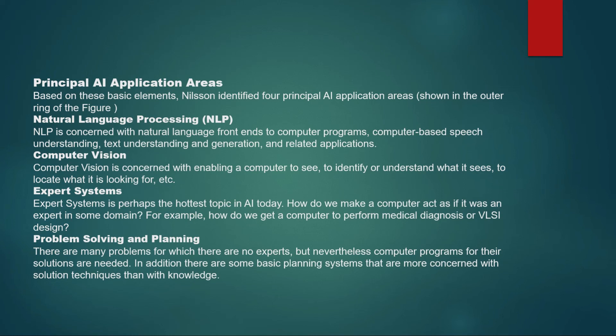To summarize, Nielsen is the researcher who proposed the Onion Model because it has rings like an onion, with an inner ring and an outer ring. The inner ring represents the main basic elements and the outer ring represents the application areas of artificial intelligence. That is all from my side. Thank you.